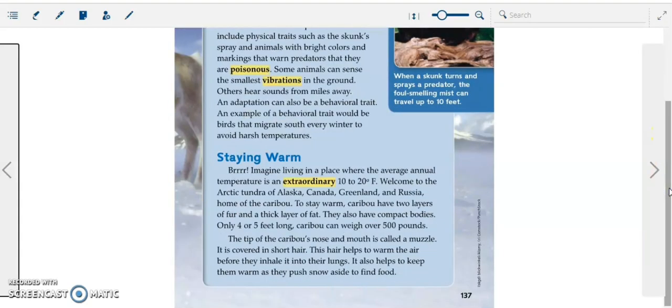Staying warm. Brrrr! Imagine living in a place where the average annual temperature is an extraordinary 10 to 20 degrees Fahrenheit. Welcome to the Arctic tundra of Alaska, Canada, Greenland and Russia, home of the caribou.